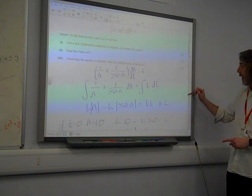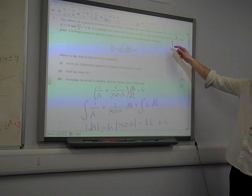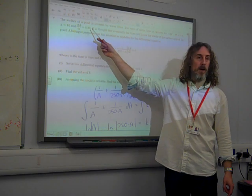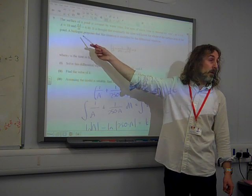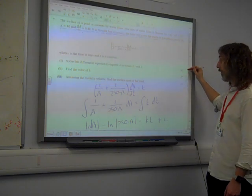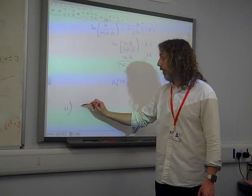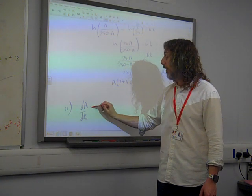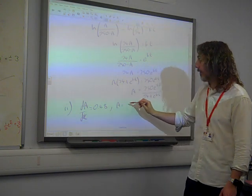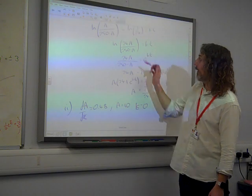Then it said find the value of k. Well, k is going to come from the differential equation. Think what they told us at the start of the question. They told us that when t was 0 and a was 10, the rate of change was 0.48. We can use that to find out k because we've got the differential equation right at the beginning. We're not going to find it from what we found out. When we do part two, da/dt is 0.48 when a equals 10 and t equals 0.